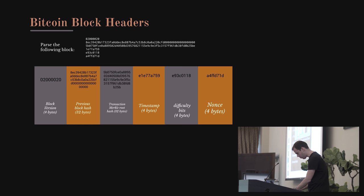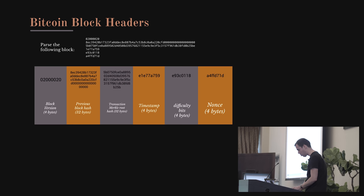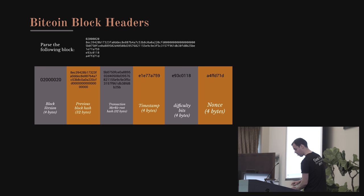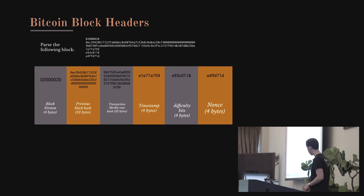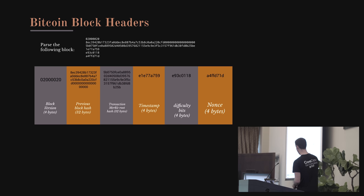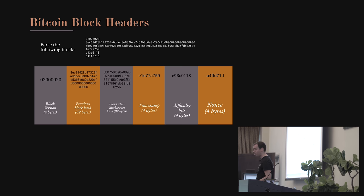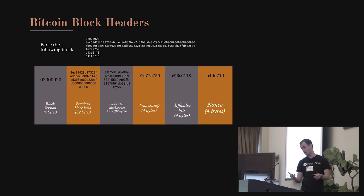In your Jupyter repo, in the blocks workbook, the final cell imports a block object from the library. You can plug in any valid block from the network, run it, and it will parse the block and show you what the hash and difficulty are. After this course, you can play around with that to get a feel for what a block actually looks like when being parsed.